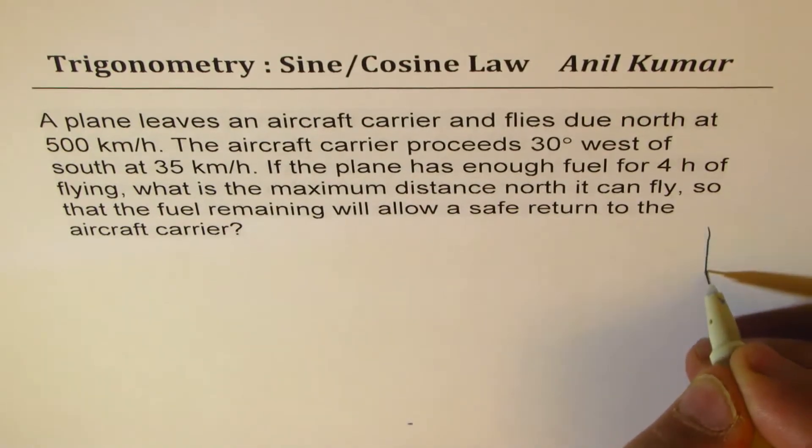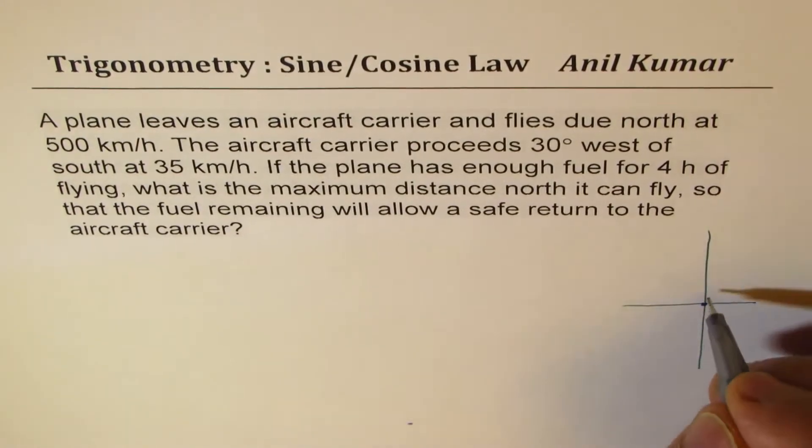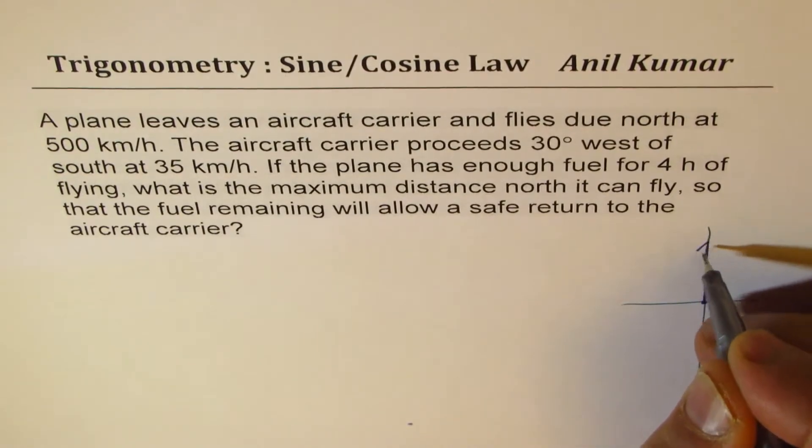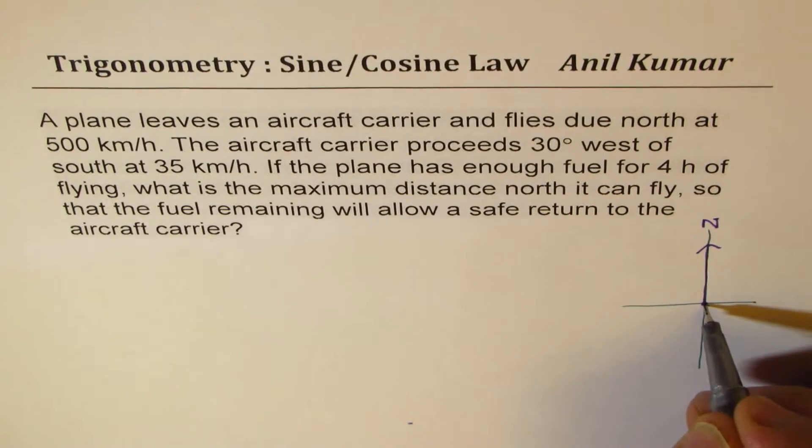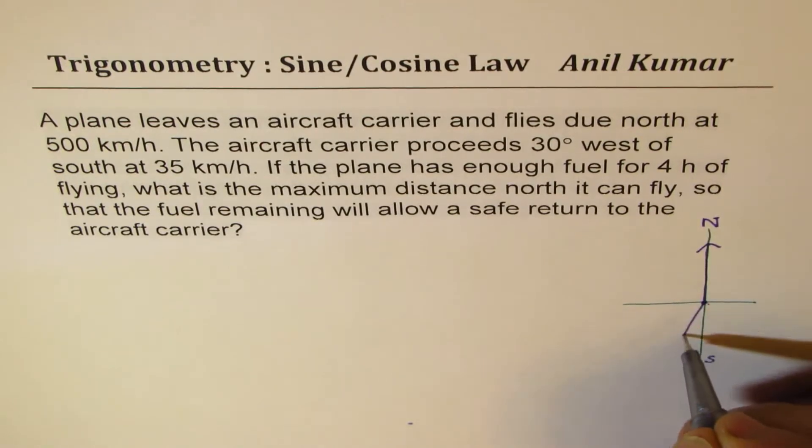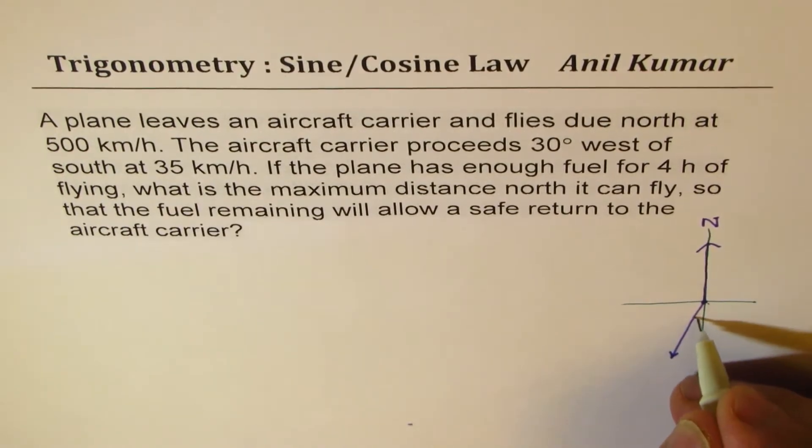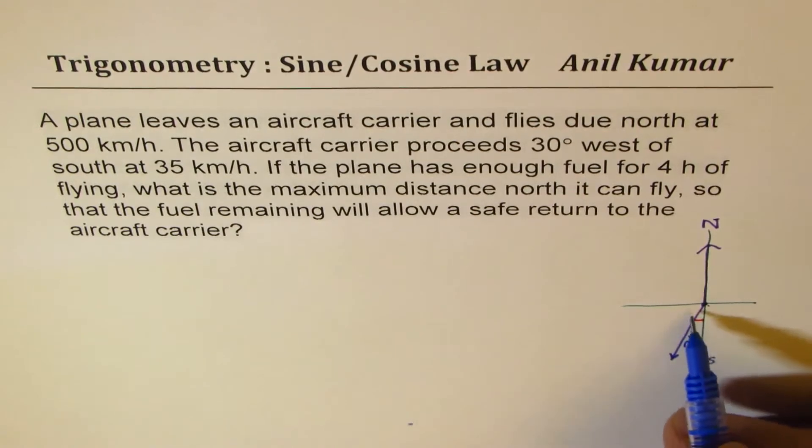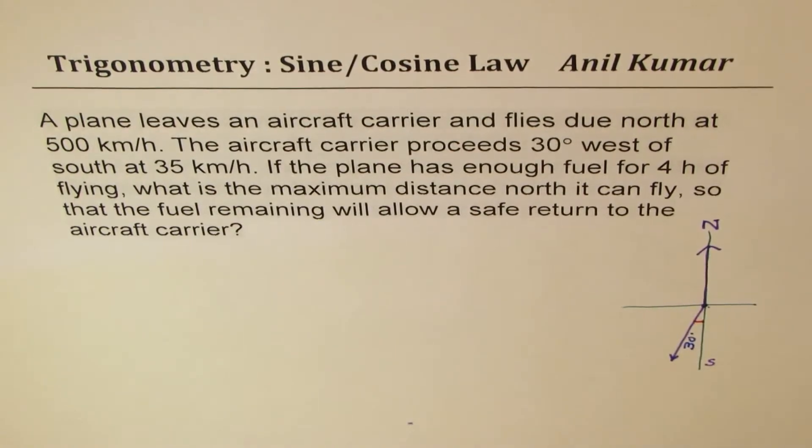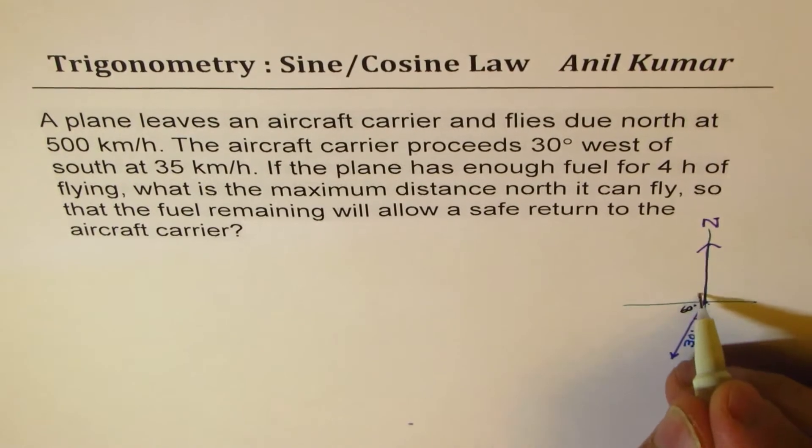So first let's sketch the scenario and then we'll try to solve it. The plane is flying north from the carrier which is here. So let's say that is the direction north for us. And the aircraft carrier moves 30 degrees west of south. So this is south. So 30 degrees west of south means in this direction. Where the angle given to us, this angle, is 30 degrees. So of course this is 90 degrees, so that becomes 60 degrees. So we can say the angle here is 60 degrees. And this angle is 90 degrees.